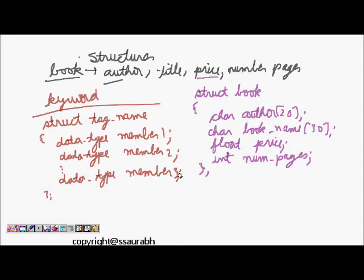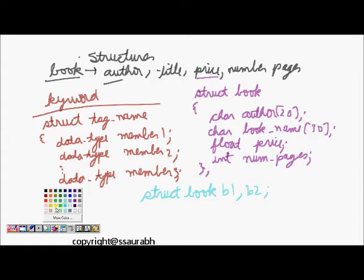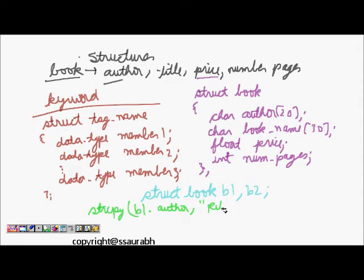Now how to declare some instances of this structure. We will say struct book b1 comma b2. Now I can access the members like b1 dot author. I will do a string copy b1 dot author comma, let's say Richie is the author name.